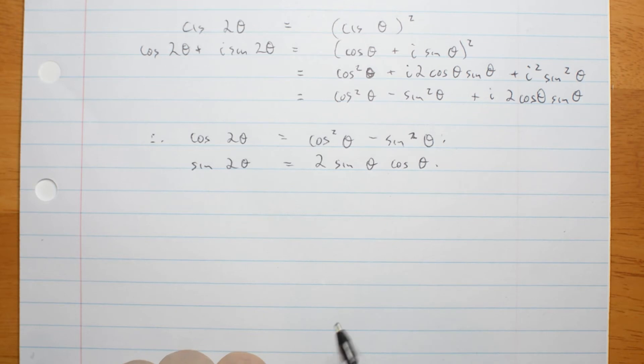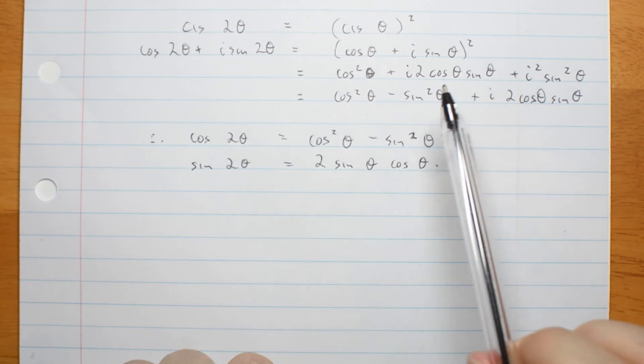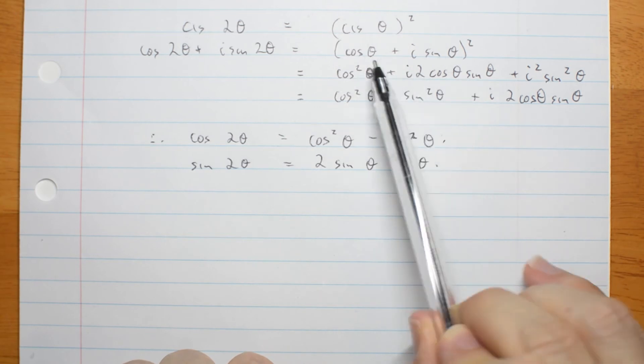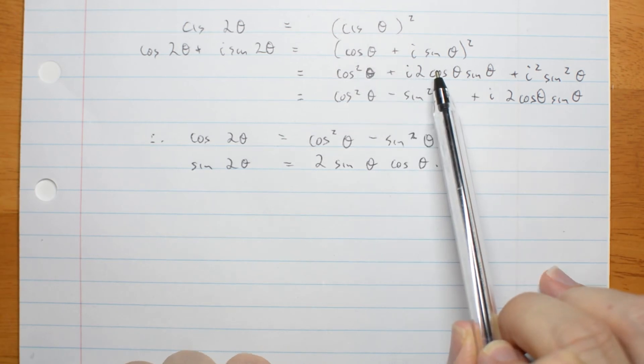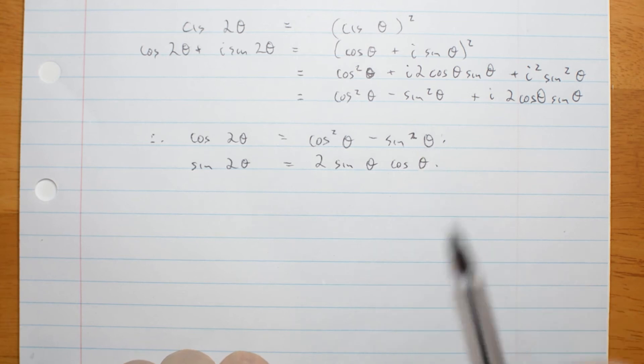You are going to need Pascal's triangle to expand the larger numbers, because this expansion is going to involve many terms. For the benefit of your 11s, here's how that works.